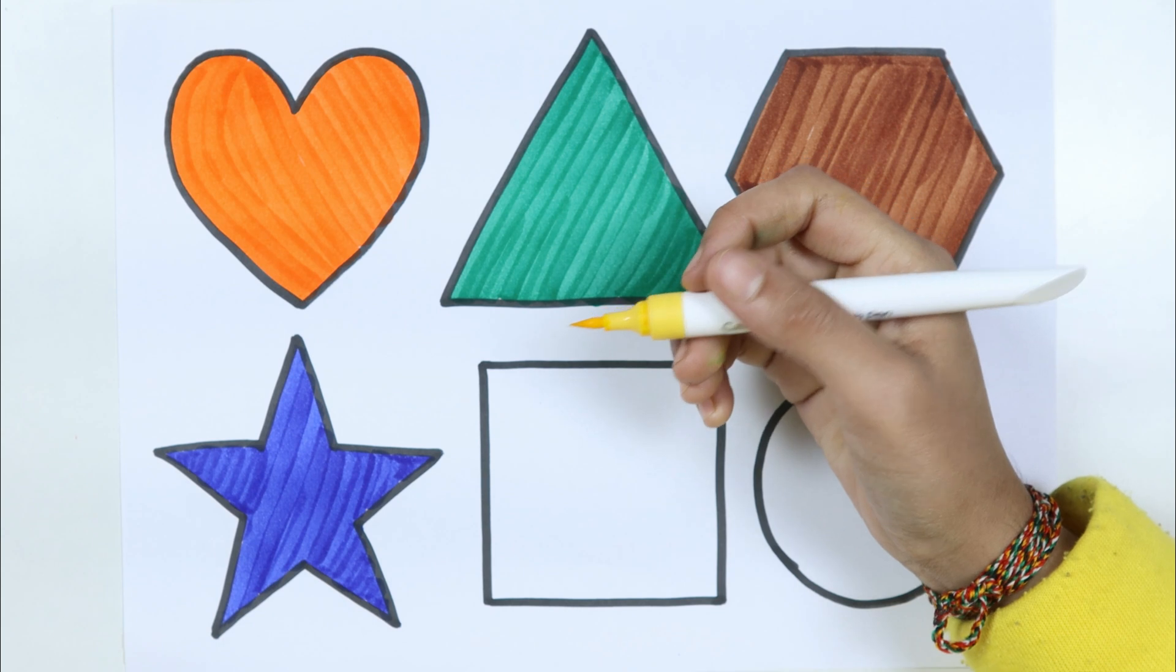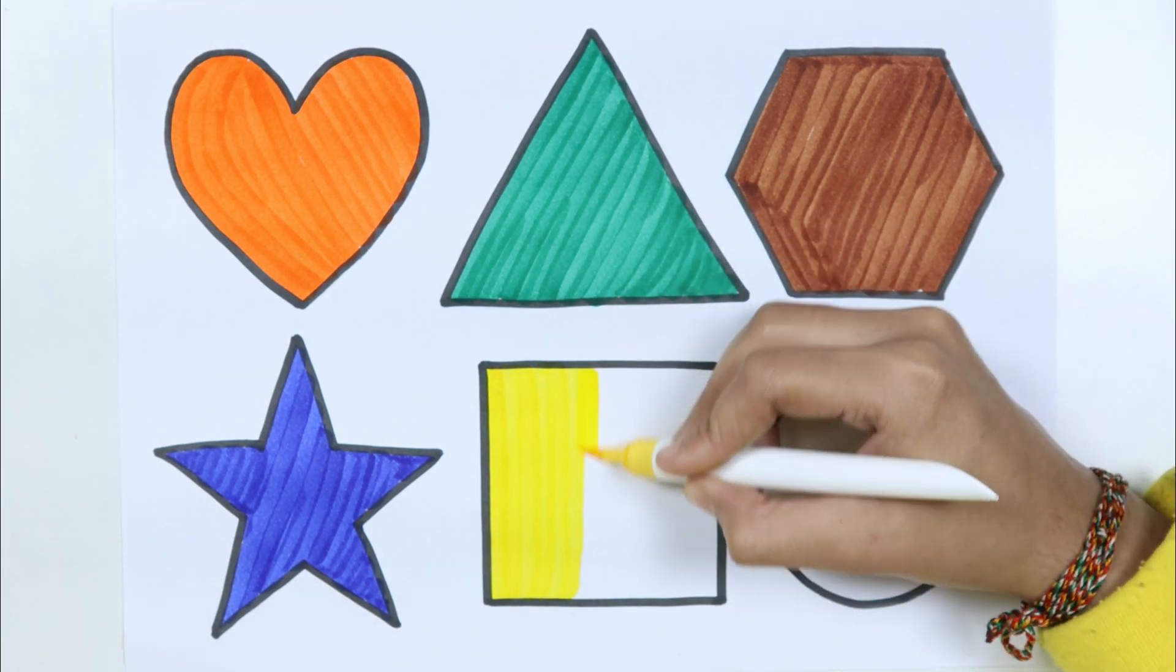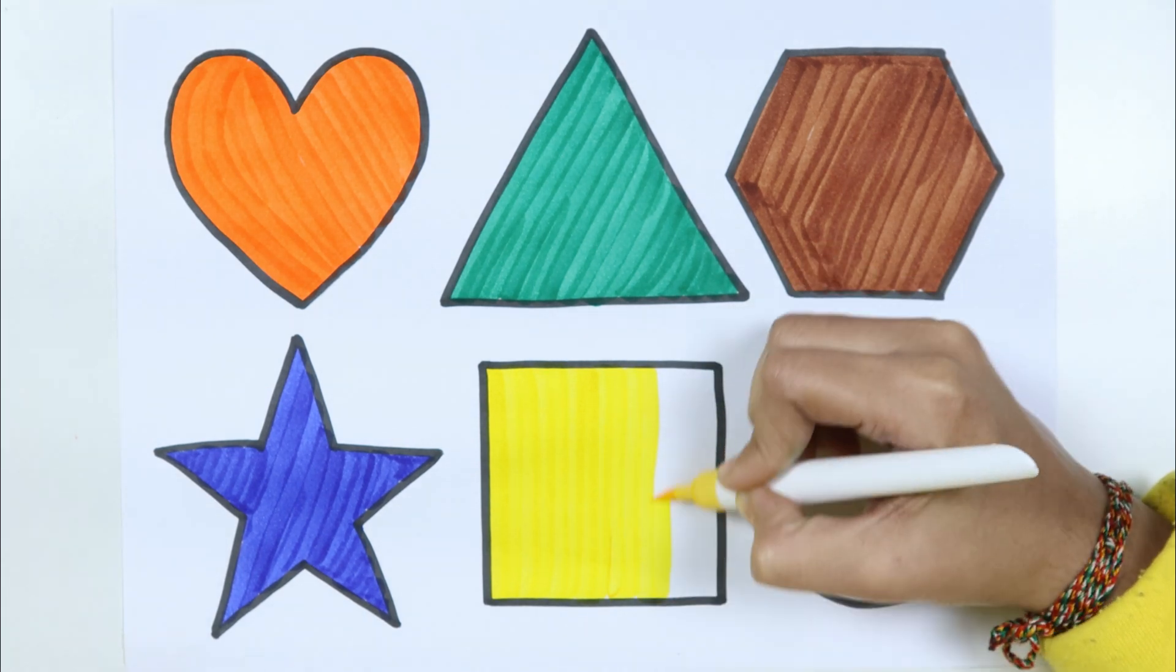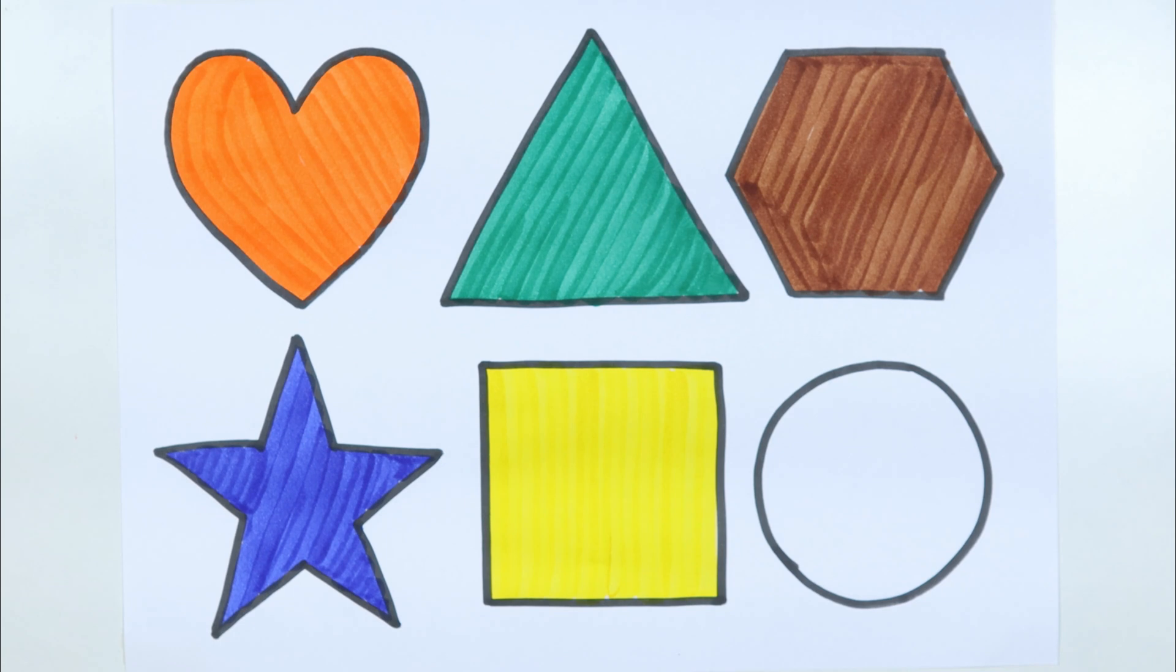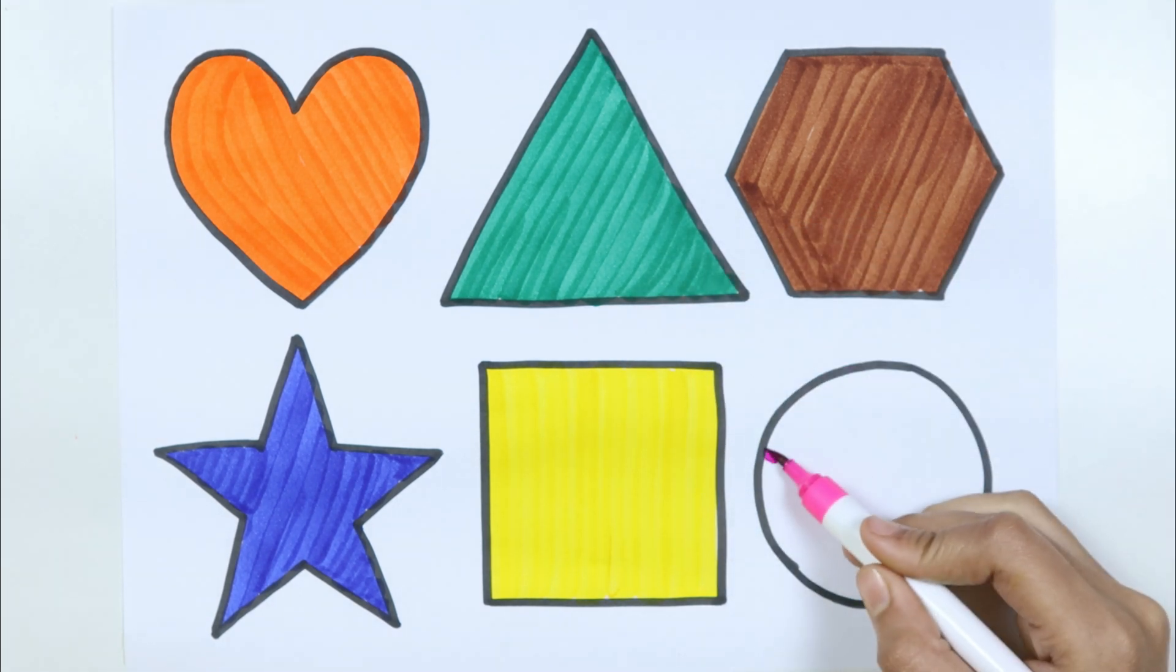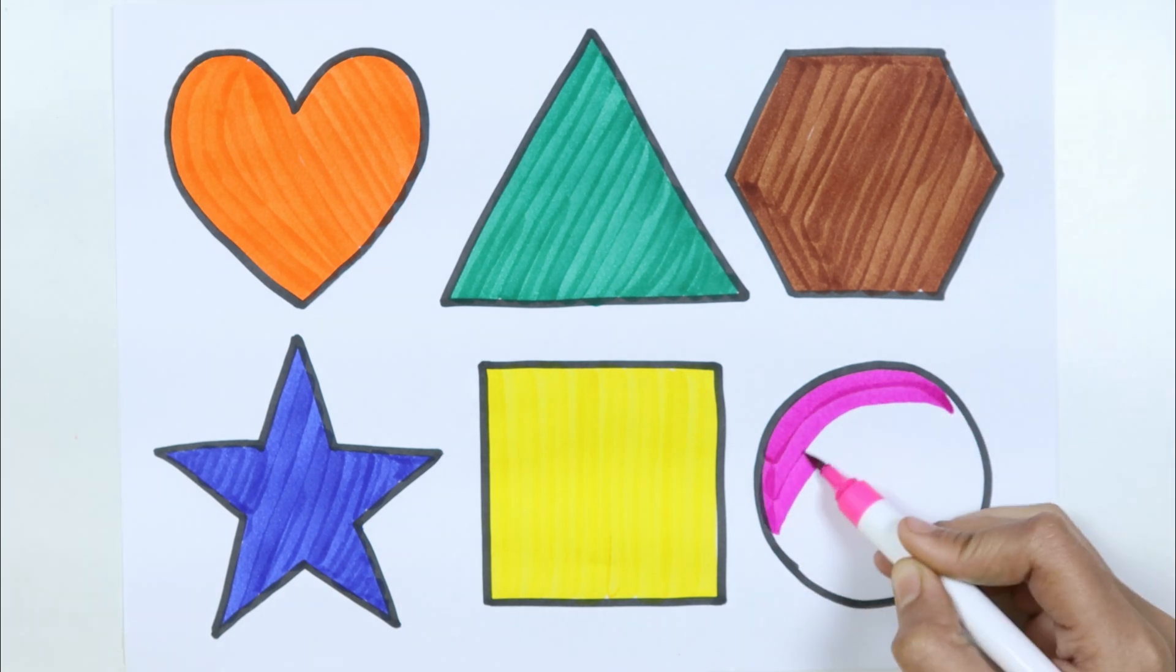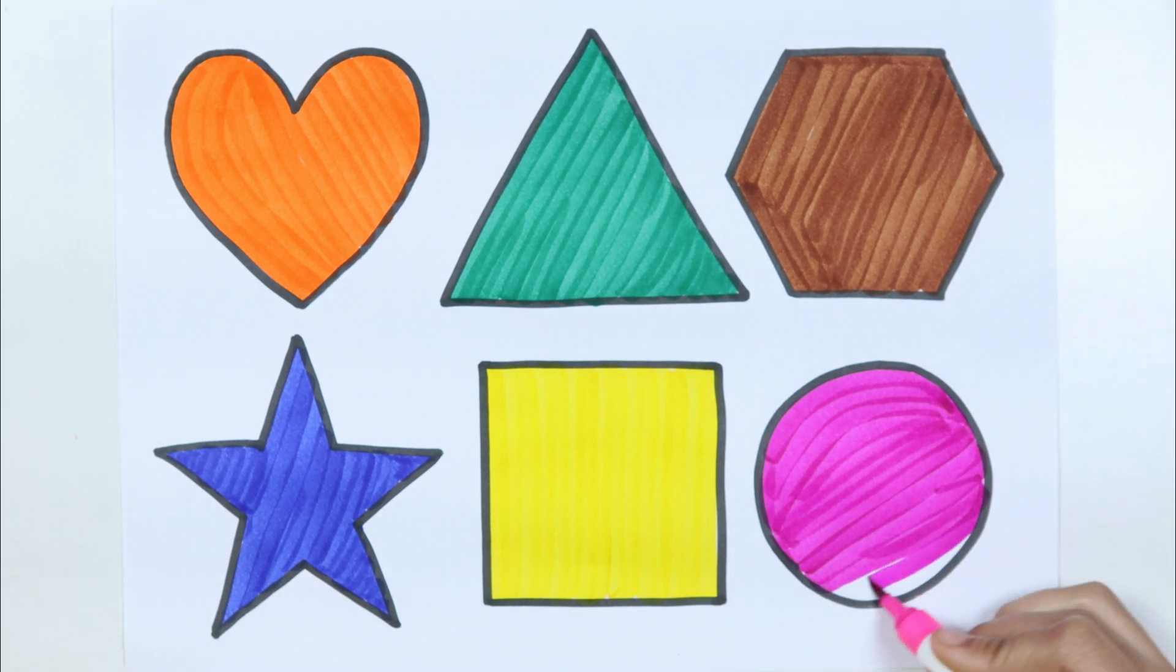Star. Yellow color. How I wonder what you are. Square. Pink color. Up above the world so high. Like a diamond in the sky. Circle.